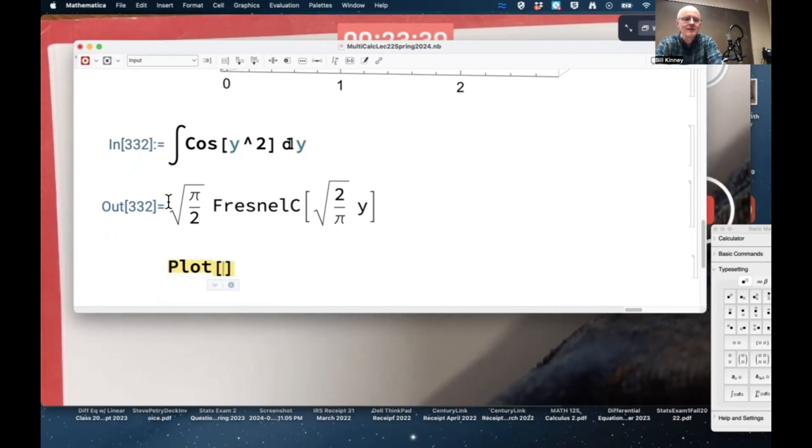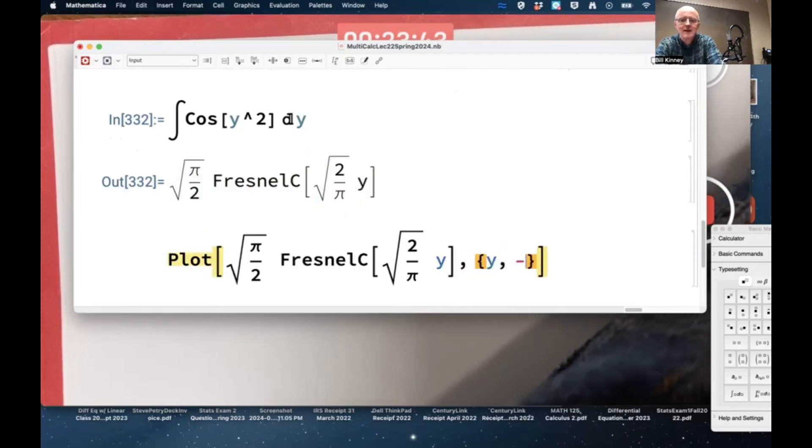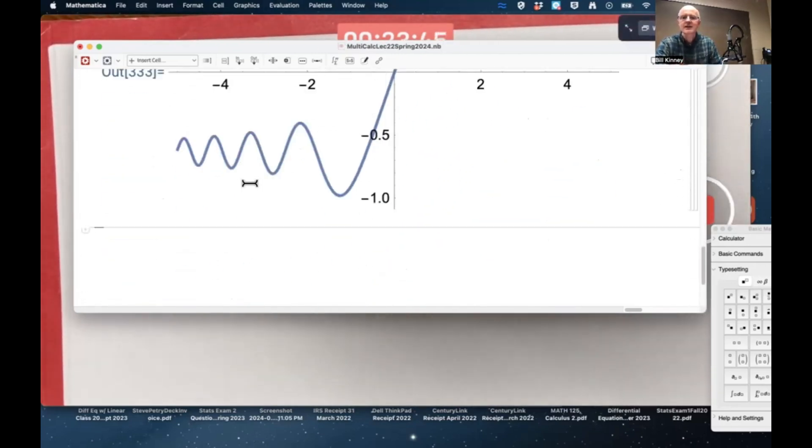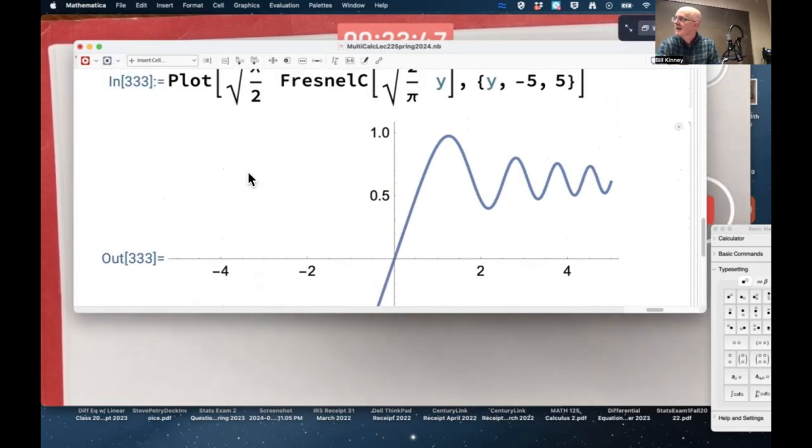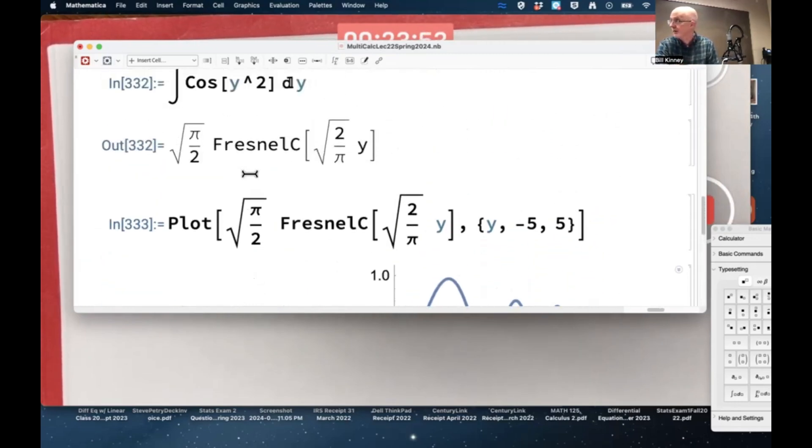You can graph it by the way. Plot this function. You can plot it. It's kind of an interesting graph. It's related to the integral of cosine of y squared. It's an antiderivative of cosine of y squared. It's not what's called an elementary function. It's a non-elementary function.